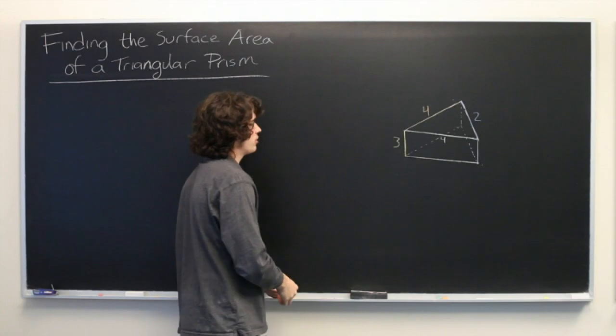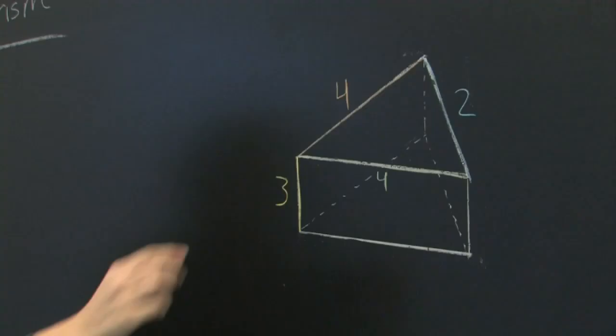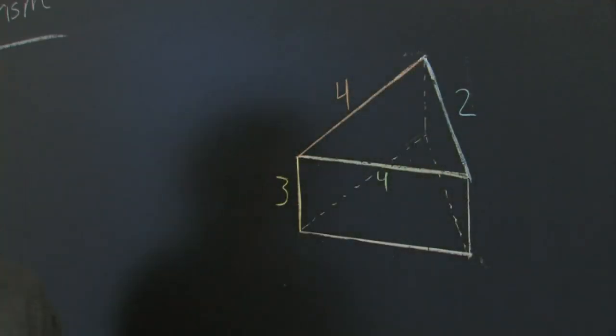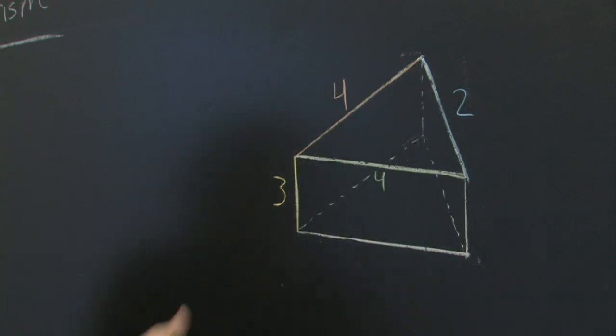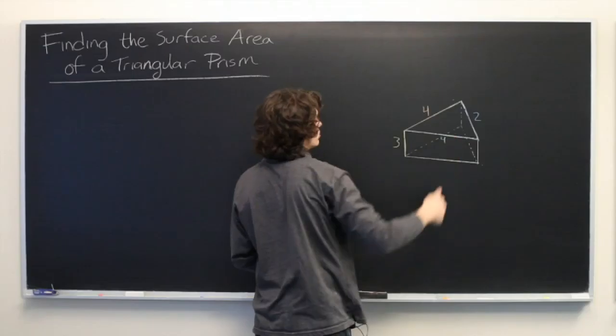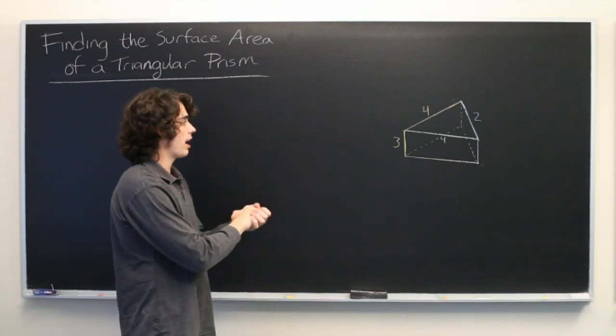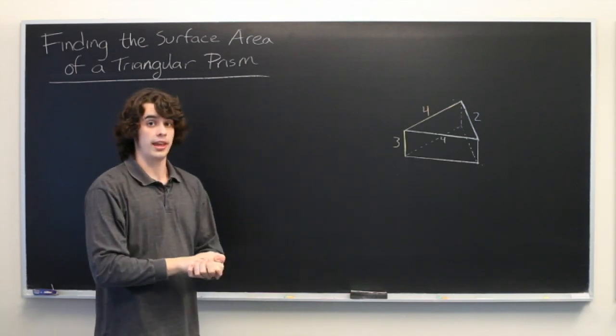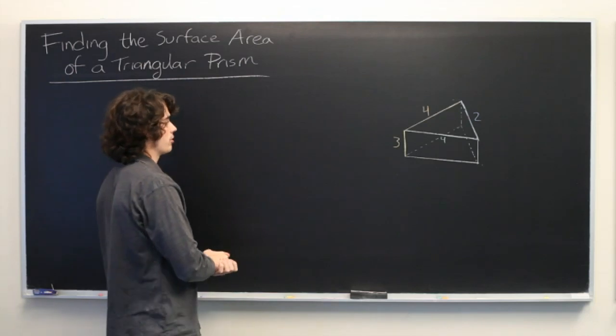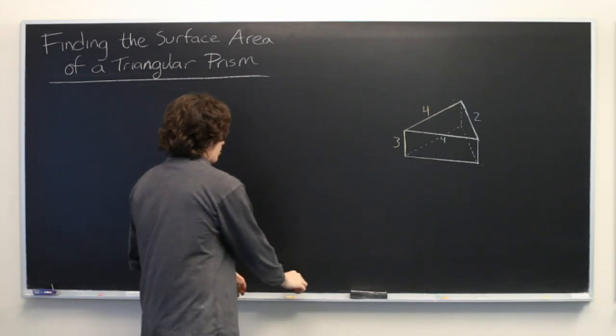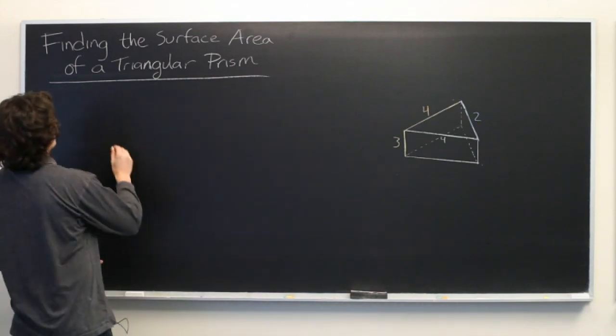So you'll notice that we haven't specified the angles on the interior of this triangle, and we also don't know the height of the triangle. So using only the three sides we need to find a way to calculate the area of the top part of this triangular prism. It just so happens that there is a formula to do so. It's known as Heron's formula.